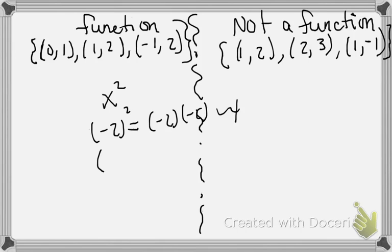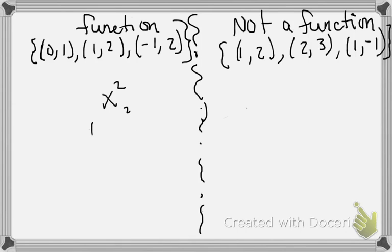Now if we have a situation where the data is telling us that negative 2 squared is both 4 and 3, that's impossible. You can't have an x value having two different y values. That's basically what we're talking about. So I'm going to write this in red so we can see it better: x cannot repeat.